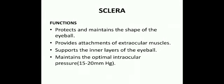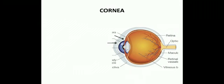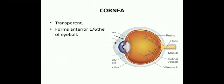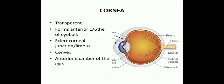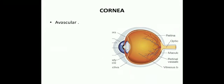The sclera also maintains the optimal intraocular pressure of 15 to 20 mmHg. Next is the cornea, which is transparent and forms the anterior one-sixth of the eyeball. The junction of the sclera and the cornea is known as the sclerocorneal junction or limbus. The cornea is more convex compared to the sclera, and the convexity decreases as the edge advances.